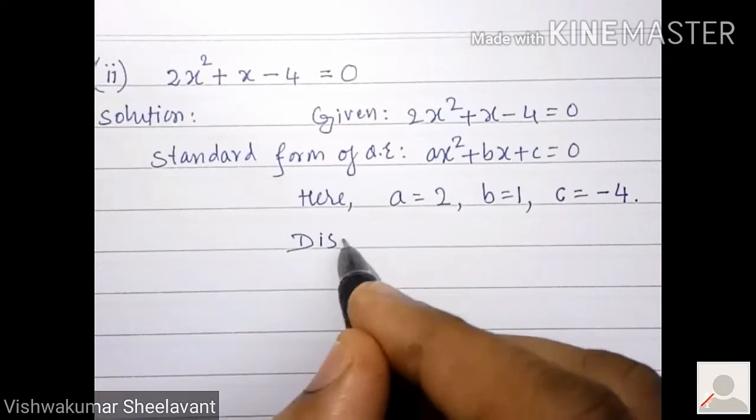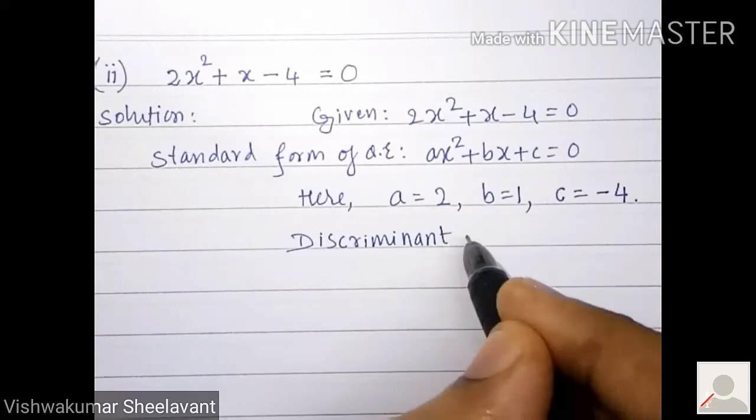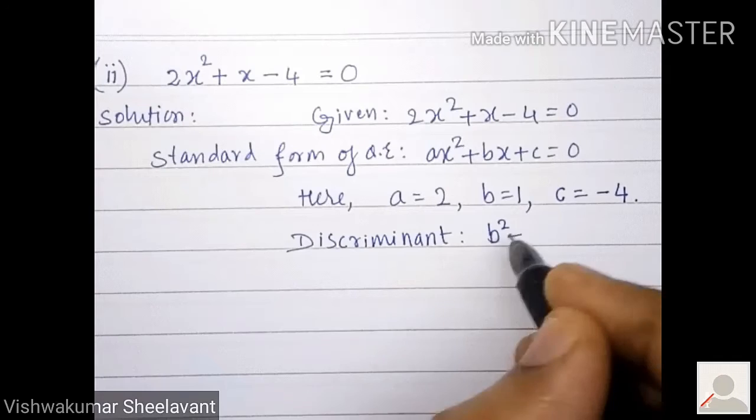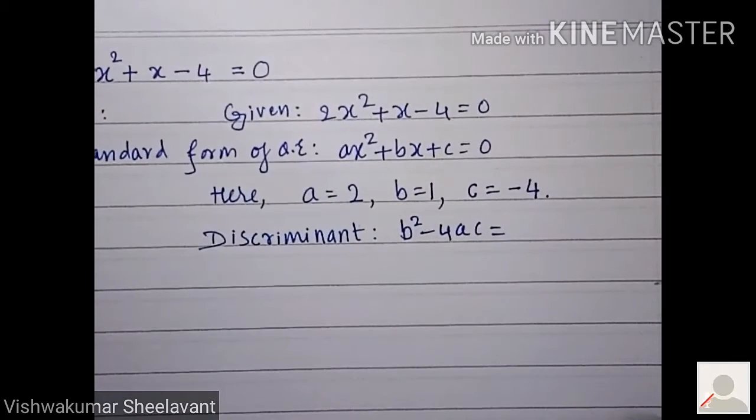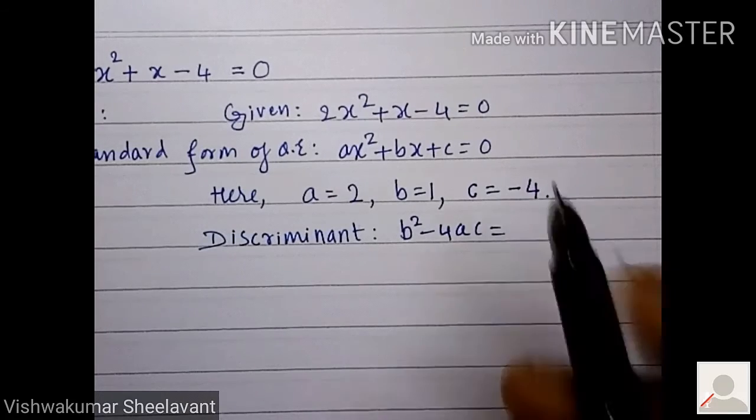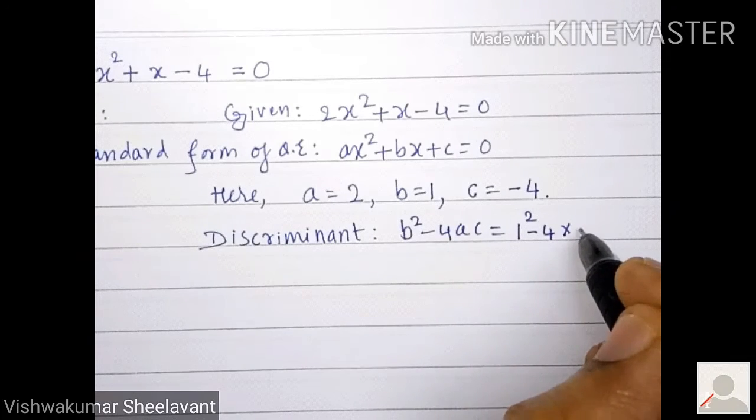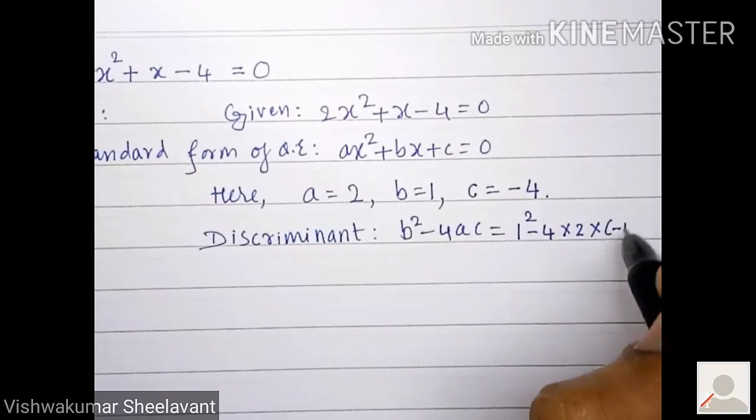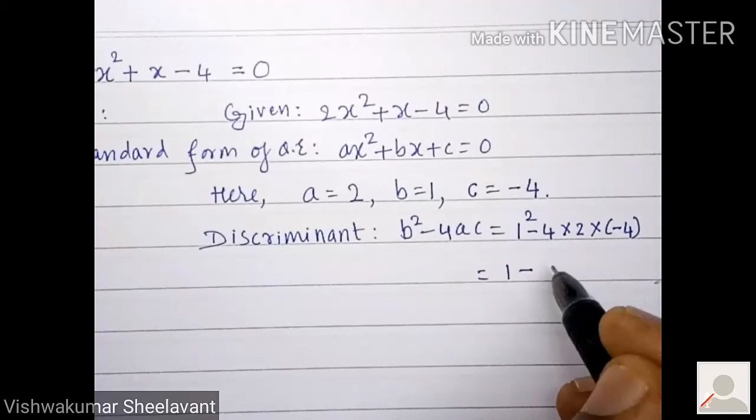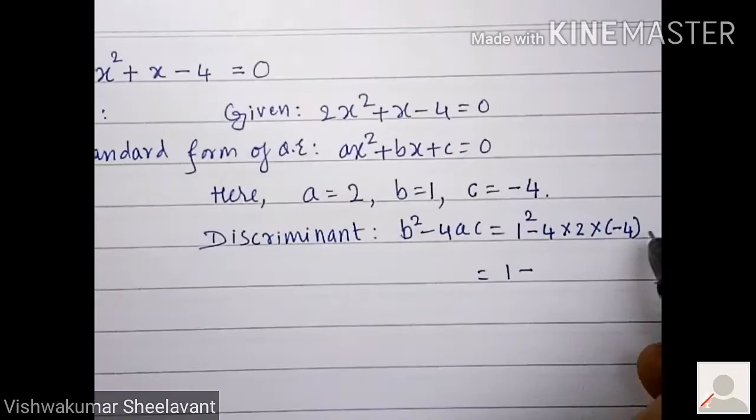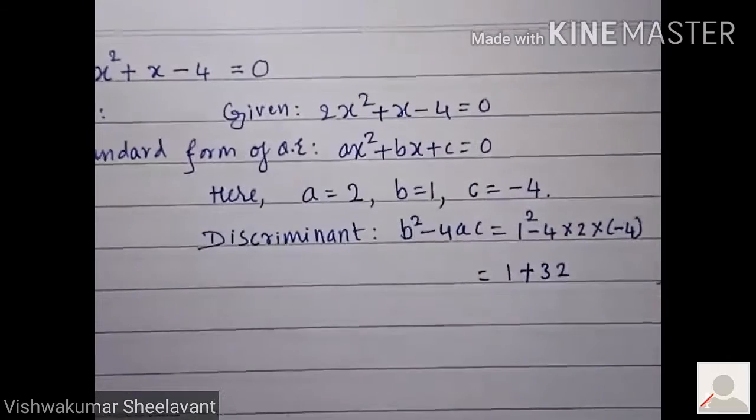Next we will calculate the discriminant. b square minus 4ac is equal to 1 square minus 4 into 2 into minus 4. 1 minus 4 into 2 into minus 4, it will become plus 32.